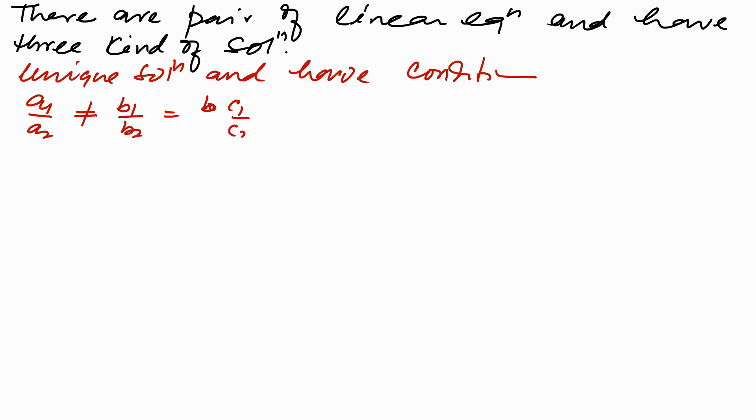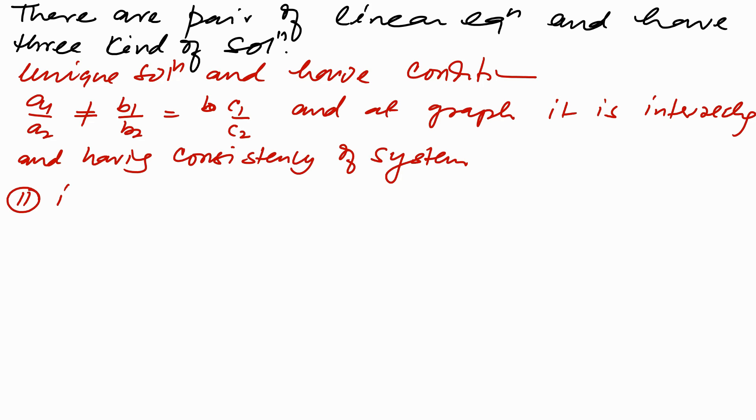And at graph it is intersecting and having consistency of system. Second one is a1 upon a2 equals to b1 upon b2.